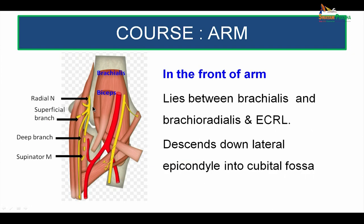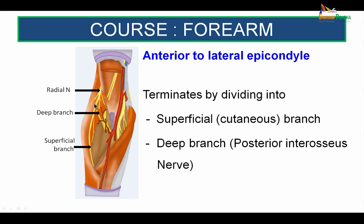Having reached the front of the arm, just at the region anterior to the lateral condyle, it lies at the lateral aspect of the cubital fossa, between brachialis on the medial side and brachioradialis and extensor carpi radialis on the lateral side. Just as it enters into the cubital fossa, it divides into its terminal branches: the superficial cutaneous branch, which passes into the front of the forearm, and the deep branch, which passes into the extensor compartment of the forearm and is called the posterior interosseous nerve.